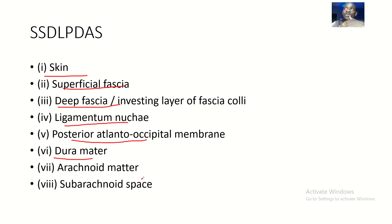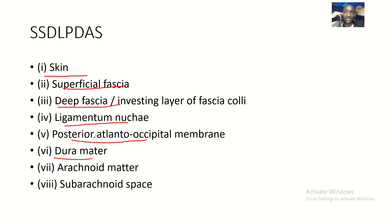If you remember in lumbar puncture, the I was interspinous ligament and S was supraspinous ligament. When talking about the neck, there is no supraspinous ligament — there's ligamentum nuchae instead. That's why we have ligamentum nuchae in the cisternal puncture mnemonic.